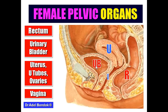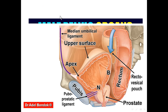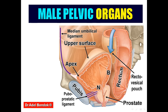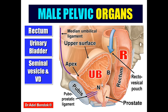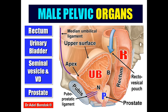The male pelvic organs: the most posterior organ is the rectum, and the most anterior is the urinary bladder. Between the urinary bladder and rectum are the seminal vesicle and vas deferens. Below the urinary bladder is the prostate gland.